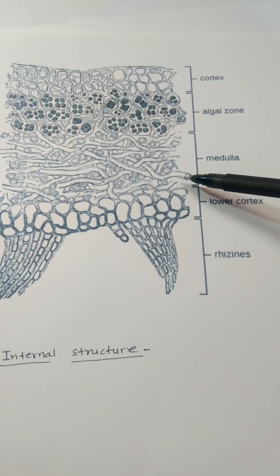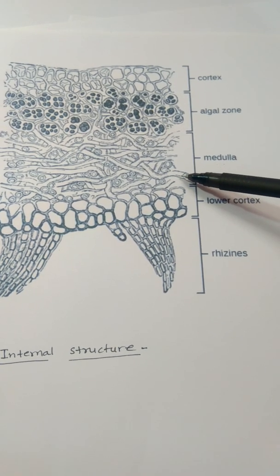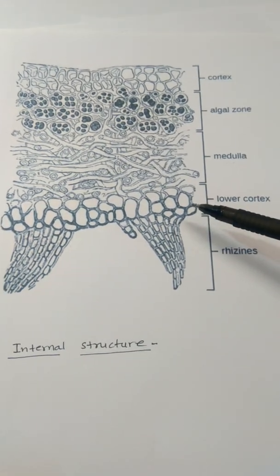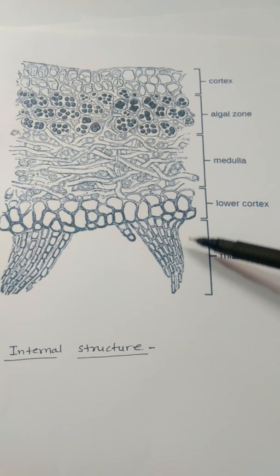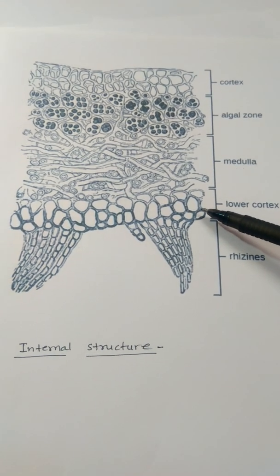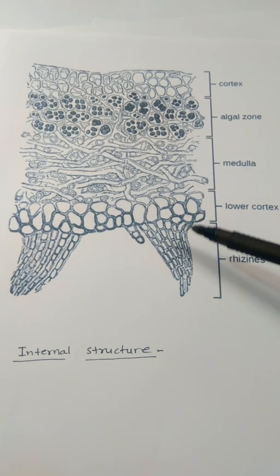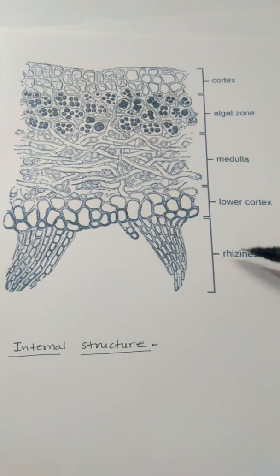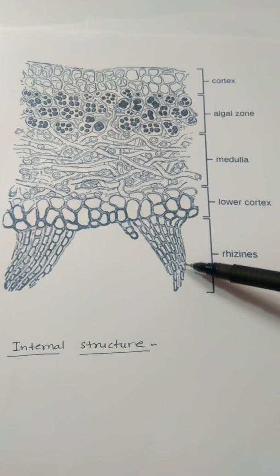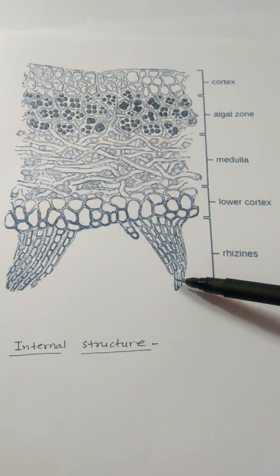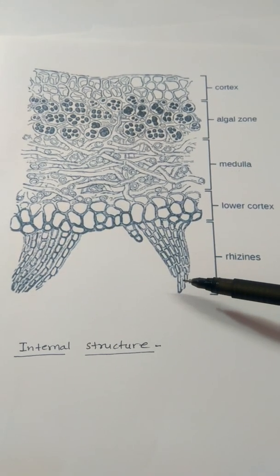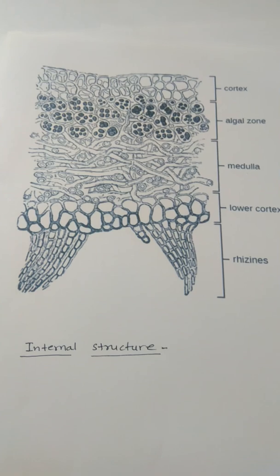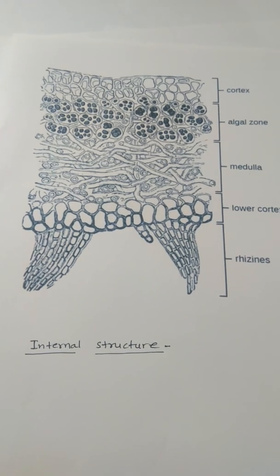The medulla is made from loosely arranged hyphae of the fungal partners — hyphae being the thread-like structures that form the body of the fungus. Below the medulla is the lower cortex, which faces the soil or substratum. The lower cortex produces densely arranged hyphae that absorb moisture and minerals from the substratum, and also secrete certain acids that dissolve rocks and substrata to obtain minerals.